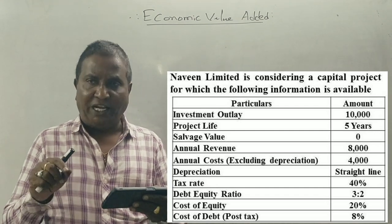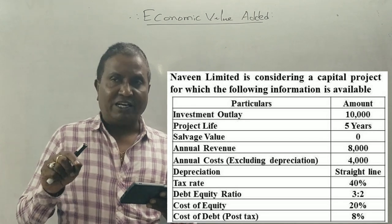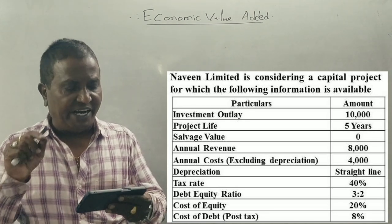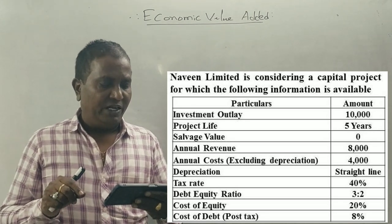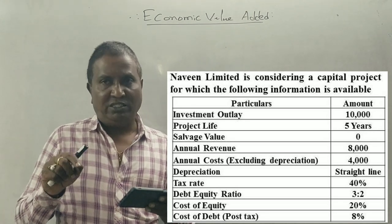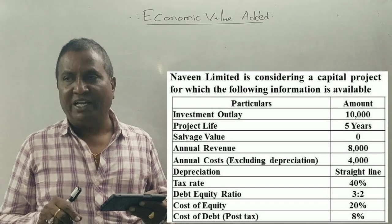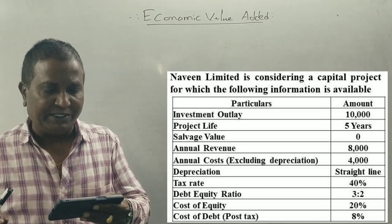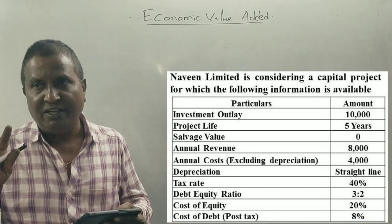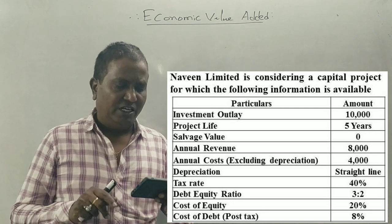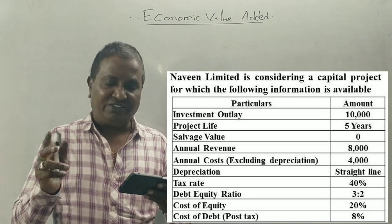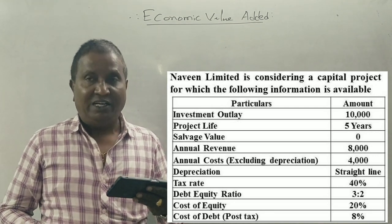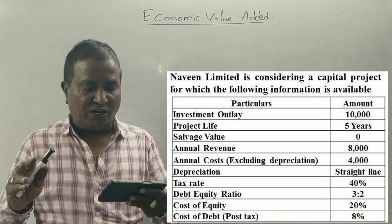Salvage value is 0. Annual revenue is Rs. 8,000. Annual operating expenses excluding depreciation is Rs. 4,000. Depreciation is Rs. 2,000. Tax rate is 40%.